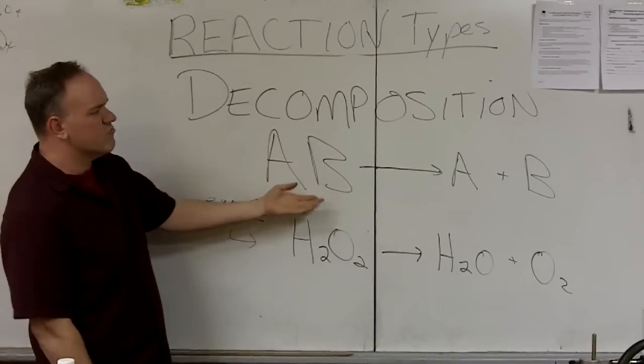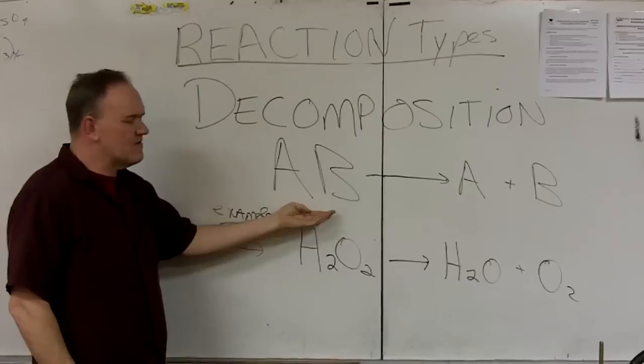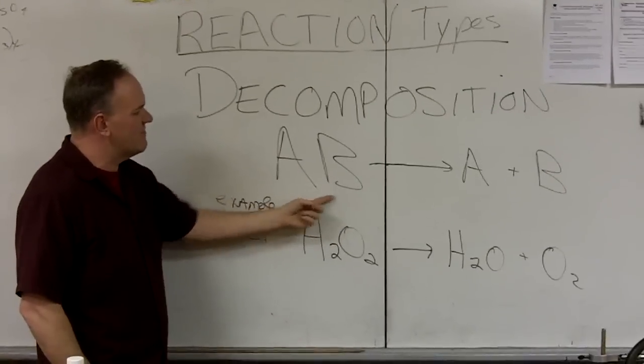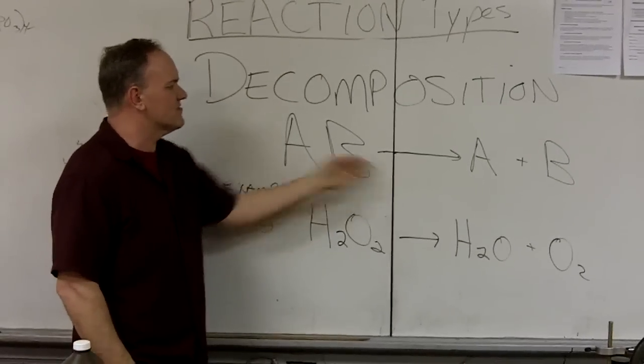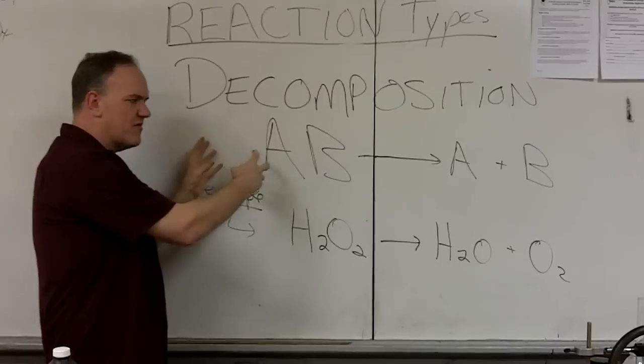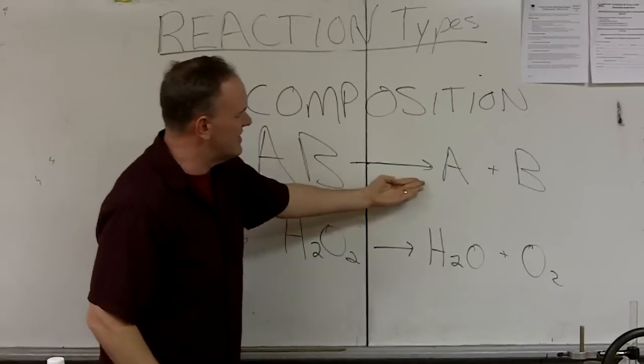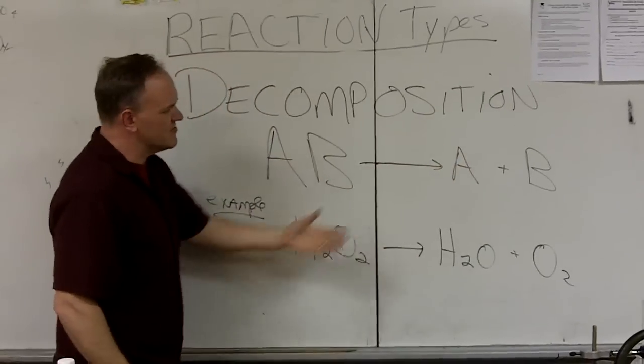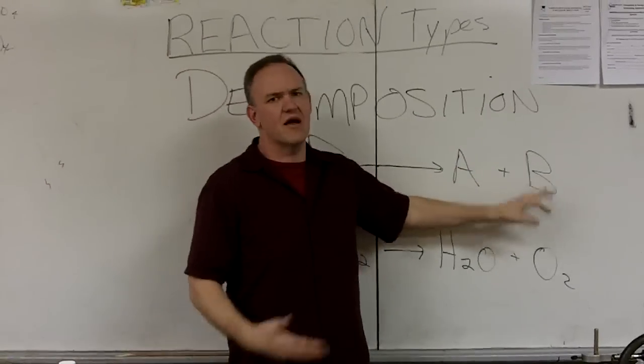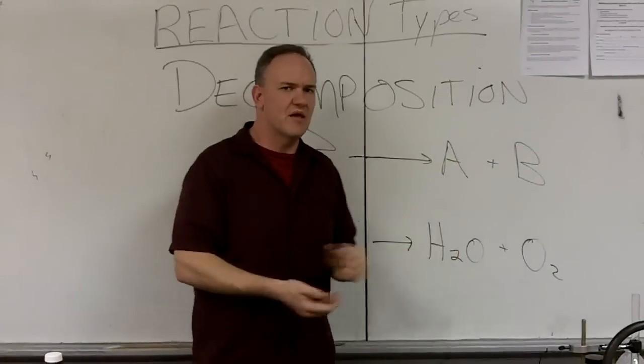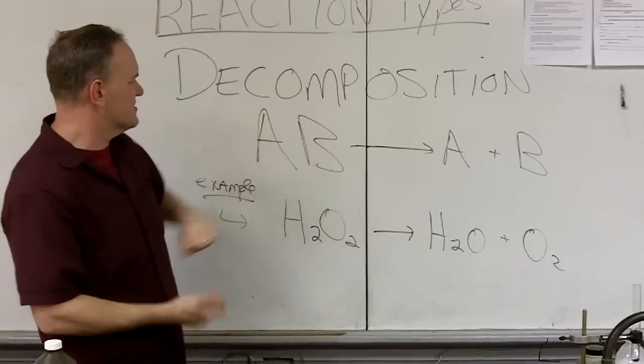It's really easy to identify a decomposition reaction because you have a compound and then an arrow. There's no pluses, there's nothing else, it's just one thing, it's a compound. You have an arrow, it breaks up into other things. Now those other things could be elements, they could be a compound and an element, it could both be compounds, but they're going to be simpler things than this.